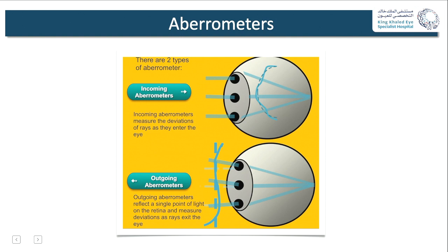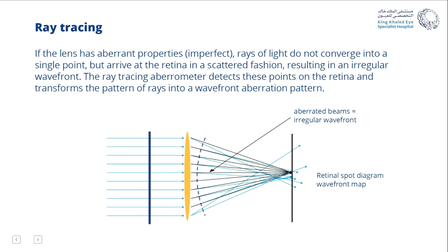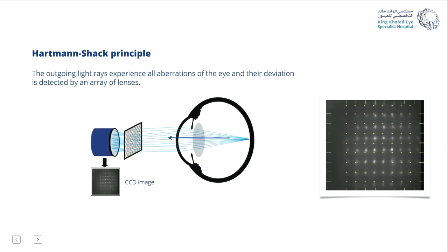Aberrometers are divided into two types. Incoming aberrometers measure the deviation of rays entering the eye toward a single point — a good example is ray tracing (e.g., the iTrace); if the lens has imperfections, rays will not converge to a single point and will scatter, which can be mapped. Outgoing aberrometers, such as the Hartmann-Shack, measure the deviation of rays coming out of the retina as they are plotted on lenslets, and this deviation is quantified on different maps.